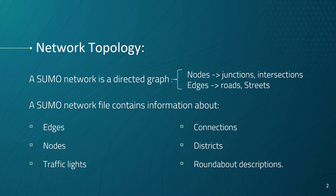Specifically, the SUMO network contains the following information: a collection of edges representing segments of roads, streets, aquatic routes, railways, or pedestrian pathways. An edge may have multiple lanes, including the position, shape, and speed limit of every lane. Then a collection of nodes or junctions, together with requests specifying the right-of-way regulations of each junction.